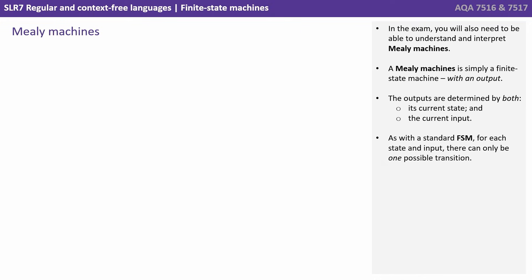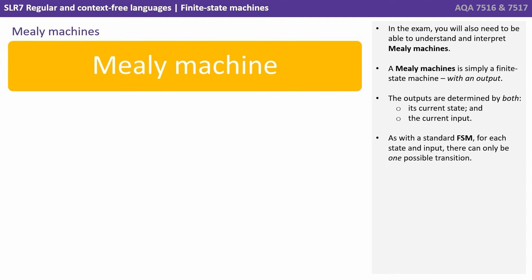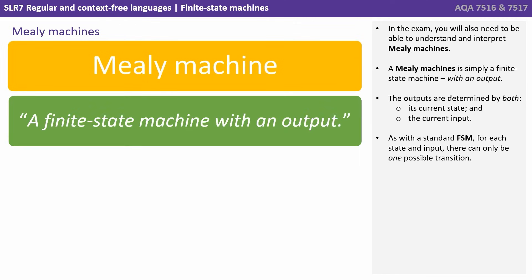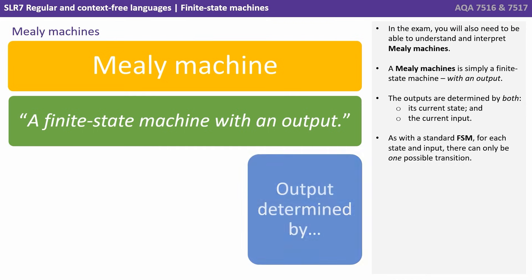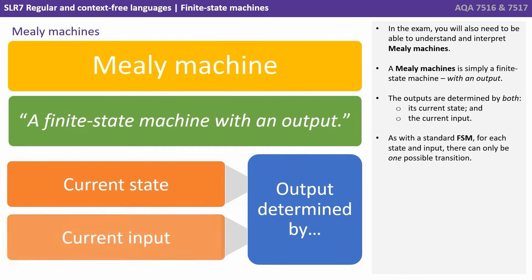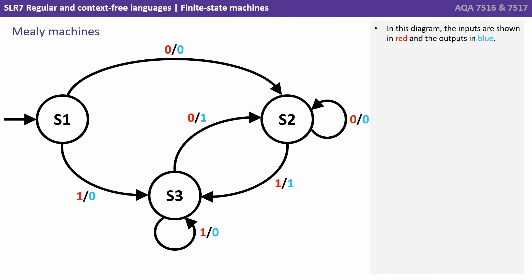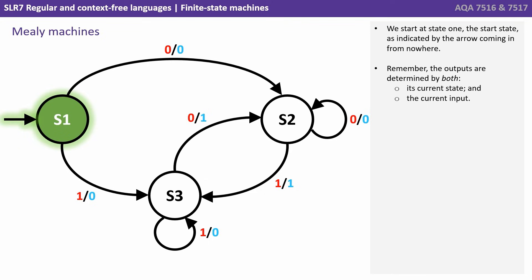In the exam you'll also need to be able to understand and interpret Mealy machines. A Mealy machine is simply a finite state machine with an output. The outputs are determined by both its current state and the current input. As with a standard finite state machine, for each state and input there can only be one possible transition. In this diagram the inputs are shown in red and the outputs are shown in blue. We start at state one, the start state, as indicated by the arrow coming in from nowhere. Remember, the outputs are determined by both its current state and the current input.